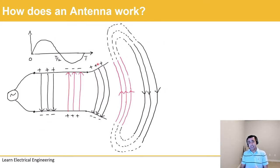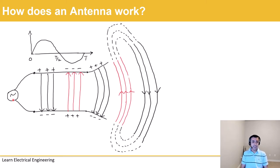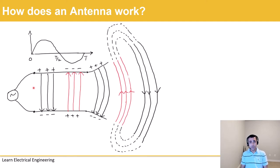In order to understand what's happening, let's consider a case where we have two conductors and we connect an AC source to them. One important thing to remember is that for an antenna to work you always have to connect an AC source, because if you connect a DC source there is nothing changing over time so no radiation takes place. In the presence of an AC source, an electric field gets generated between those two conductors, with electric lines of force going from the positive to the negative charge and then flipping direction.